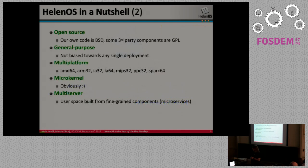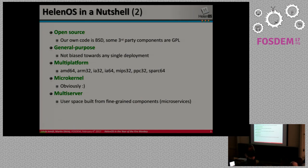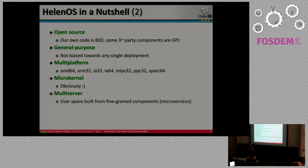Open-source means that the bulk of our codebase has the new BSD license. We also use some third-party components which we use indirectly and which are under GPL. General purpose means we don't want to be biased towards any particular use case or deployment — we want to create an operating system that is as useful for servers, desktops, and embedded systems as for any other use case.